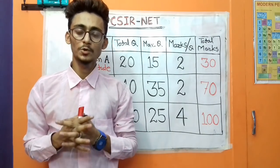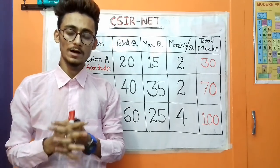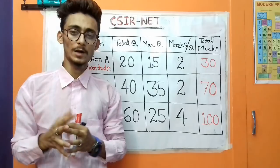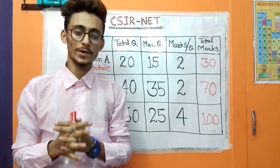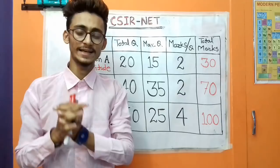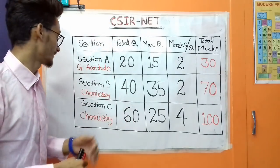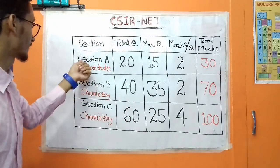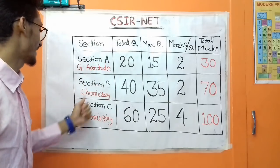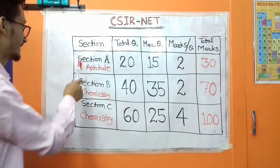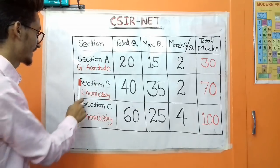Hey guys, welcome to my channel. In this video we will talk about the upcoming CSIR NET exam. First, let's look at how many sections are in the question paper. There are three sections: Section A, Section B, and Section C. Section A is based on general aptitude type questions, while Section B and Section C are based on chemistry type questions.